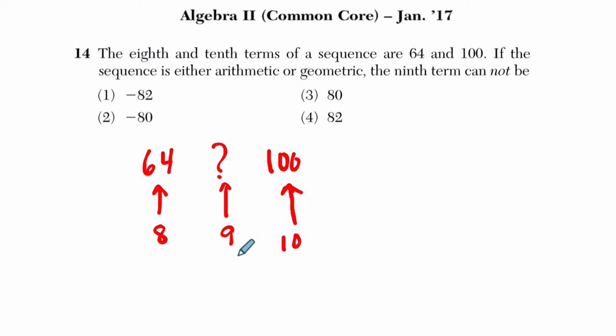I bet they're going to ask us about that missing term. If the sequence is either arithmetic or geometric, that's a weird statement. What are they saying there? They're saying it could be one or the other. It could be arithmetic or geometric, one or the other.